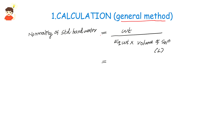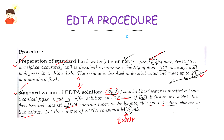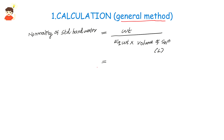The first step is to find the normality of standard hard water. The formula is: normality equals weight divided by equivalent weight, divided by volume of solution in litres. Weight is equal to 1 gram, equivalent weight of CaCO3 is 50, and volume is equal to 1 litre. Therefore normality N1 equals 1 divided by 50 divided by 1, which is 0.02 normal. This is N1.